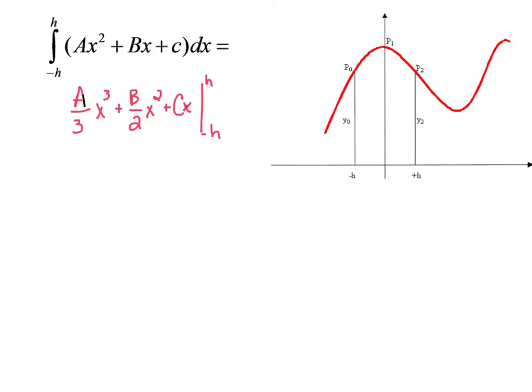So when we do that, if I plug in positive h, I get a over 3 x cubed plus b over 2 x squared plus cx.